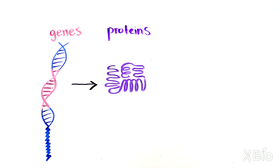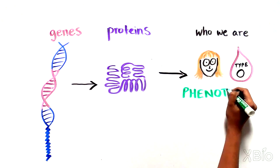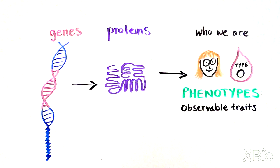The proteins that genes code for make us who we are. They give us ginger hair, or be blood type O. These traits are also called phenotypes in the field of genetics.